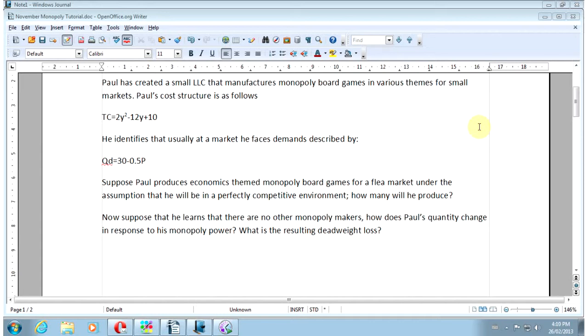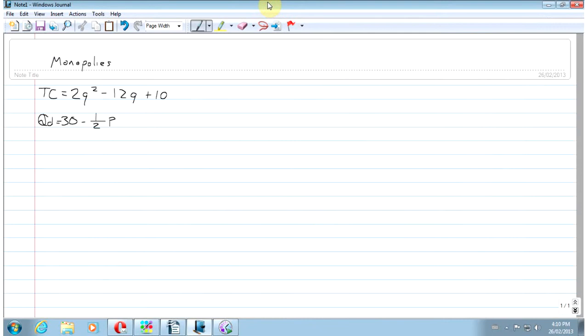He identifies that usually at a market he faces demands described by quantity equals 30 minus 1.5 times price. Suppose Paul produces economics-themed monopoly board games for a flea market under the assumption that he will be in a perfectly competitive environment. How many will he produce? And then suppose that he has a monopoly. What is the deadweight loss, and how many does he produce then? Okay, so go ahead and pause it, attempt these problems, and I will do the solutions. Okay, so you're going to have to bear with me because I haven't actually prepared this one ahead of time, so you'll get to see all the possible mistakes that I make, because that does happen.